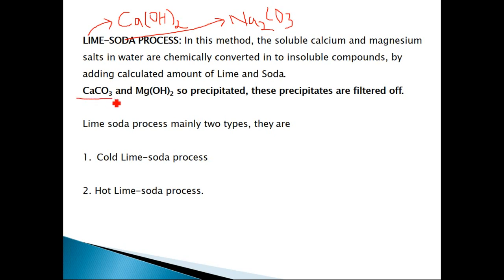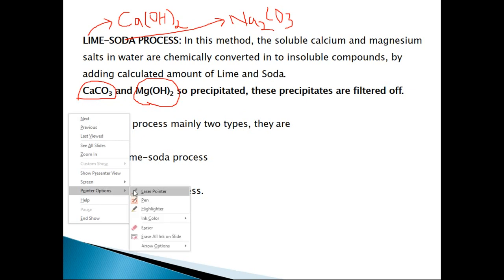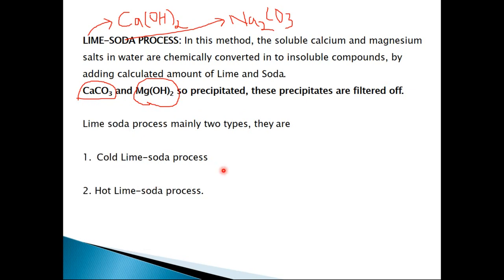Calcium carbonate is the insoluble precipitate, so you can remove, quantify, and identify it. Similarly, magnesium hydroxide is also a precipitate. You can do the analysis to identify the amount present in the water. In industry, basically two types of lime-soda process are used. The first occurs at room temperature, which is known as the cold lime-soda process.